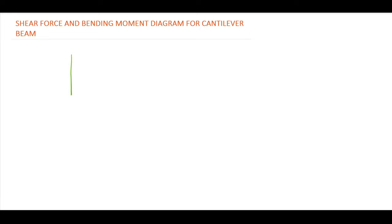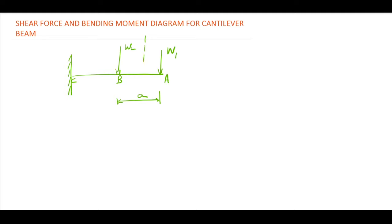Now consider another case where the cantilever beam has multiple forces: W1 acting at the free end and W2 acting at distance a from the free end. For the shear force diagram, mark points A, B, and C. For a section in span AB at distance x, the shear force equals W1, since on the right side the algebraic sum of forces is W1 acting downward — hence positive.